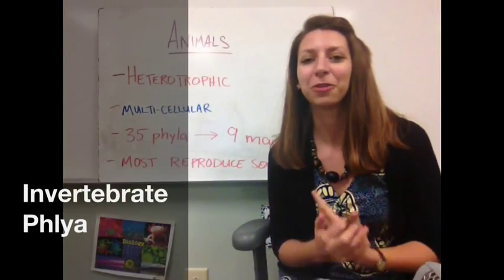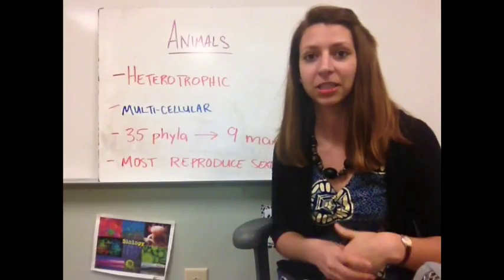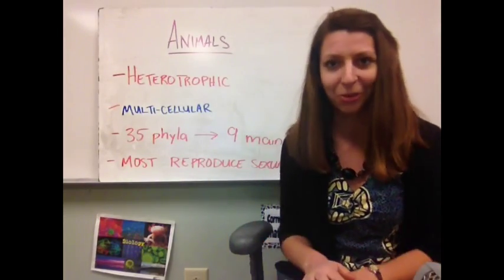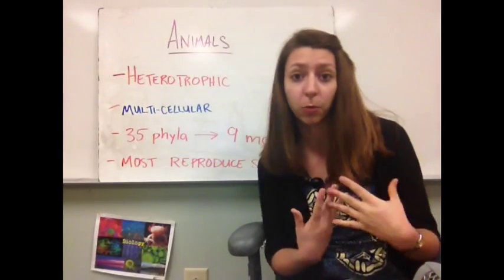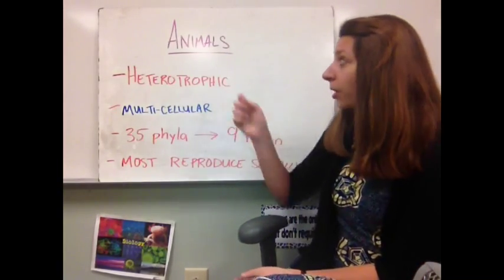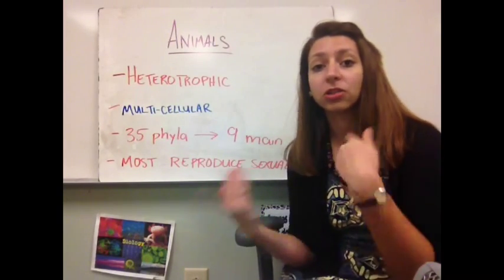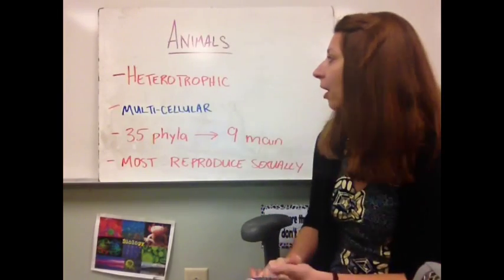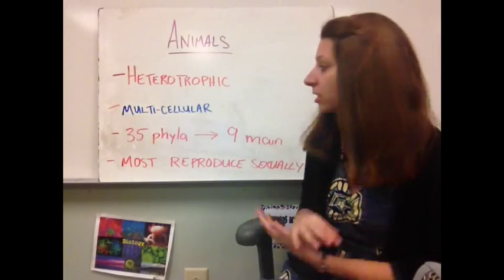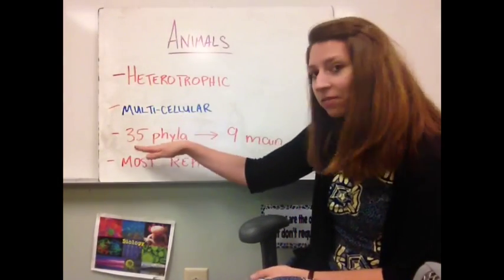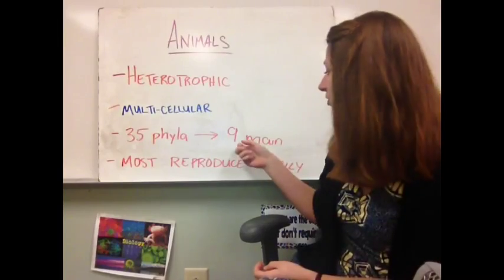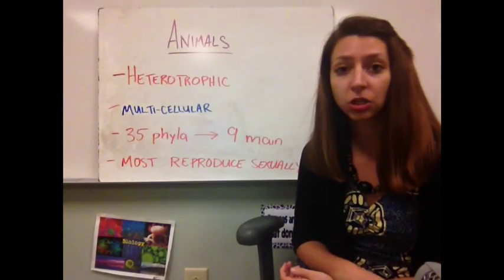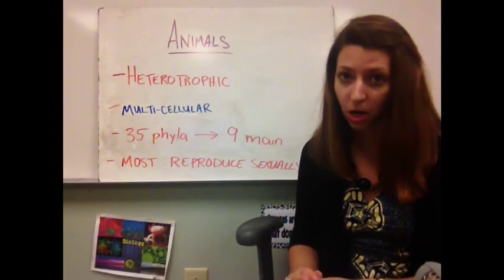Today we're going to be looking at a few characteristics of the invertebrates in the animal kingdom. But first, let's look at a few characteristics of the animal kingdom, Kingdom Animalia, as a whole. Animals are going to be heterotrophic, which means they get their energy from something else — they don't undergo photosynthesis and they don't decompose things. They are multicellular, meaning they are made of more than one cell. There are about 35 different phyla in the animal kingdom, but we're going to break it down into nine main ones. Most are going to reproduce sexually, so there's very little asexual reproduction in the animal kingdom.